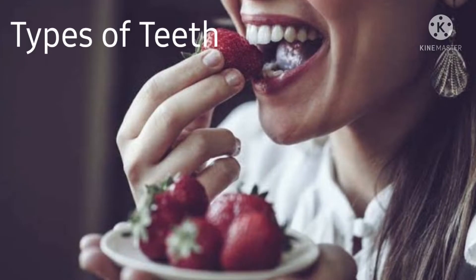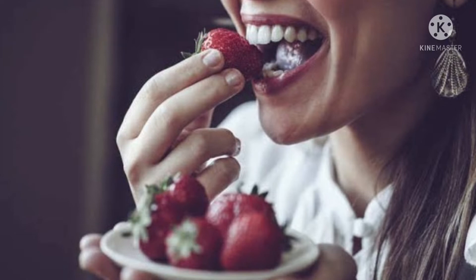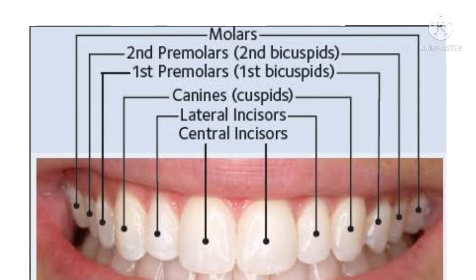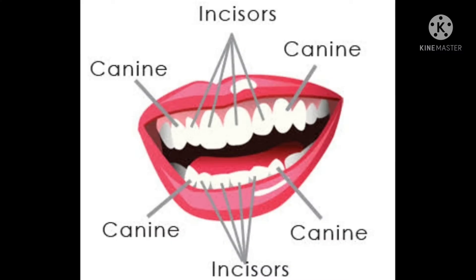Teeth are mainly needed to bite and chew food. According to their function, teeth are of four types: incisors, canines, premolars, and molars. There are eight incisors in all — four in each jaw. They are used for cutting and biting food. There are four canines in all — two in each jaw.